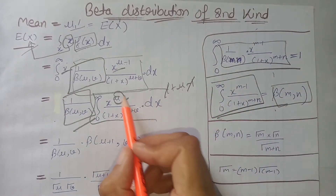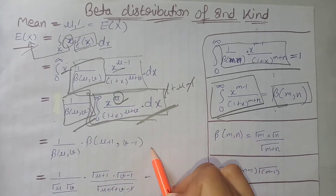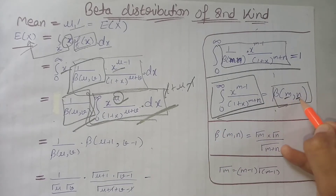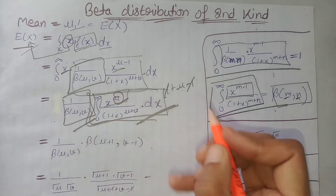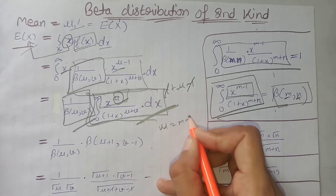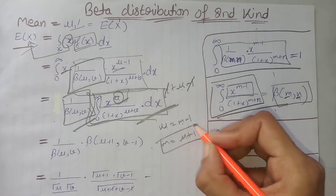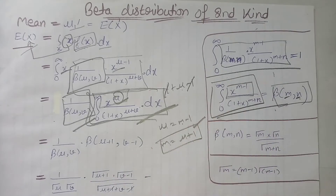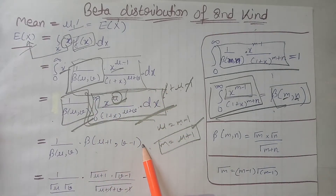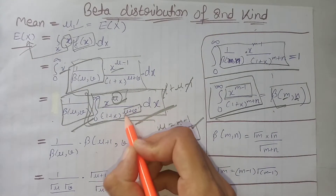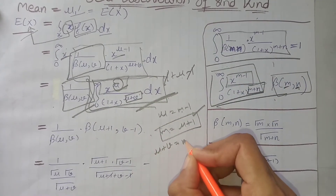This term is just similar to the beta function definition, so we can convert it into the beta function by finding the values of m and n. Comparing the two terms, we see that u equals m minus 1, which means our m is equal to u plus 1.